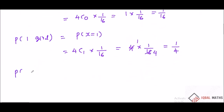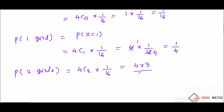P of 2 girls. x equal to 2. 4C2 into 1 by 16. 4C2 is 6, so 6 by 16 equals 3 by 8. P of X equal to 2 is 3 by 8.